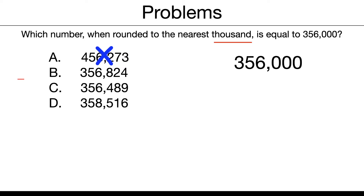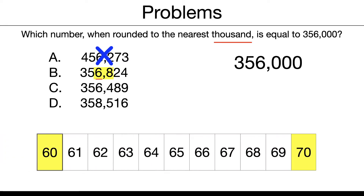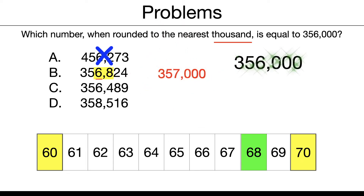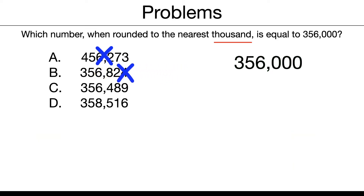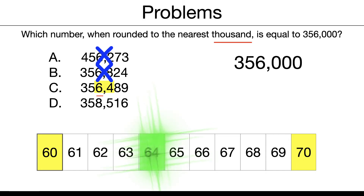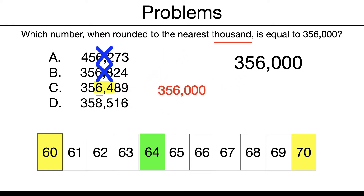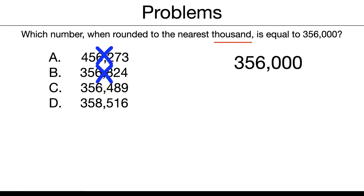Let's try C. We're going to thousands — underline, box. That's going to also round to 60: 64 rounds to 60. Left stays the same, right pops into zeros. We now have 356,000, and that is a match. So that is our correct answer. But let's just check D anyway — underline, box. 85 is going to round to 90. And when we do those steps, you can see that 359,000 does not match the one we were looking for. So our final answer is C.